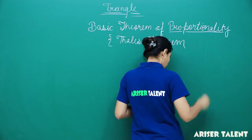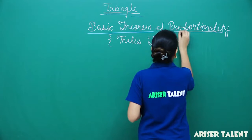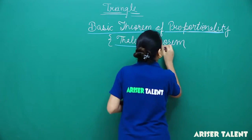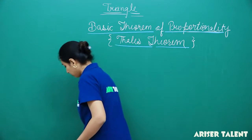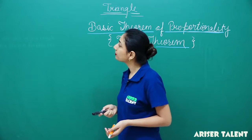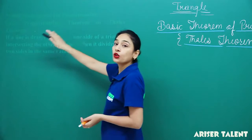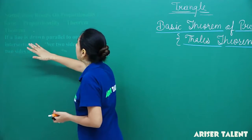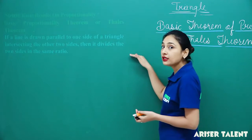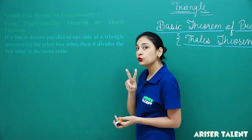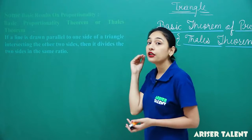Now, it is important students, so concentrate. Look here: Basic Proportionality Theorem, or Thales' theorem. If a line is drawn parallel to one side of a triangle intersecting the other two sides, then it divides the two sides in the same ratio.